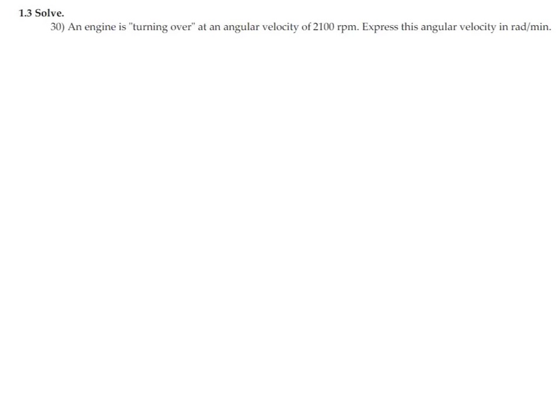An engine is turning over at an angular velocity of 2100 rpm. Express this angular velocity in radians per minute.